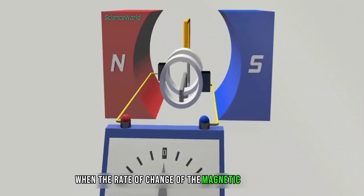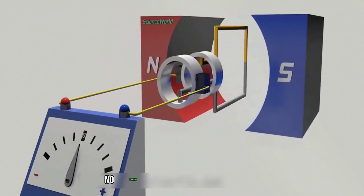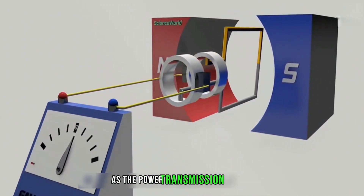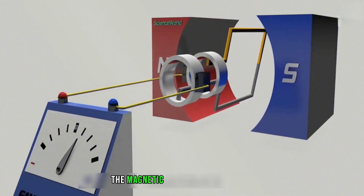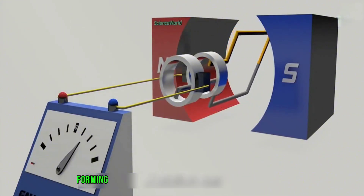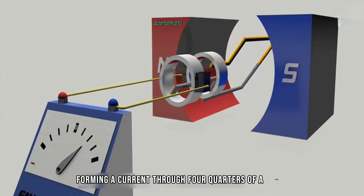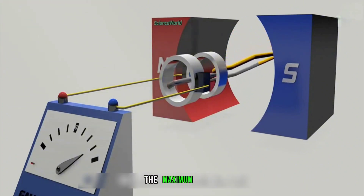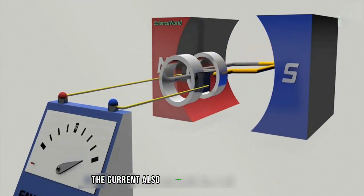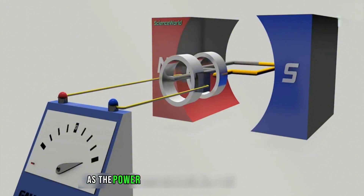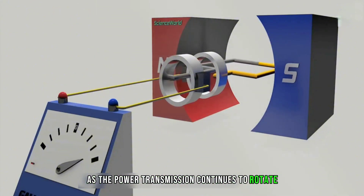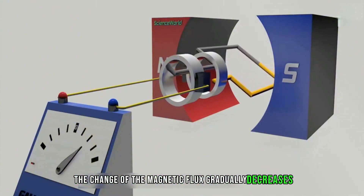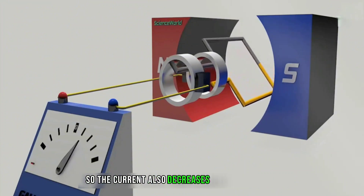When the rate of change of the magnetic flux is zero, no current will be generated. However, as the coil rotates, the magnetic flux begins to change, forming a current through four quarters of a cycle. After the change of the magnetic flux reaches the maximum value, the current also reaches the maximum value. As the coil continues to rotate, the change of the magnetic flux gradually decreases, so the current also decreases.